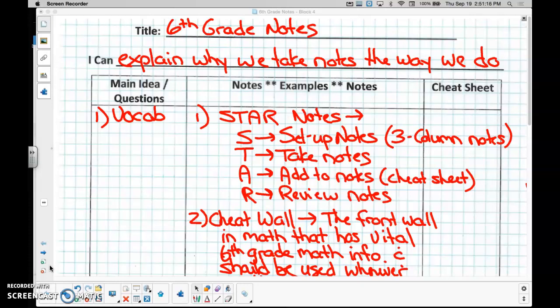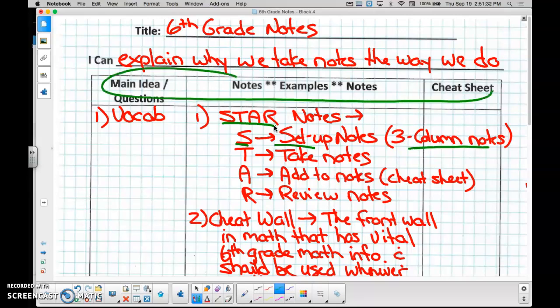There are a few vocab words we need to discuss. The first vocab word is star notes. Star is an acronym for the following. What does the S in star stand for? Set up notes. And what kind of notes do we set up? We call them column notes. These are our three columns right here. What does the T stand for? Take notes. So after you set up your notes, you take the notes with me. And then what does the A stand for? Add notes. And where do we add the notes? The cheat sheet. That's where we do our thinking about the notes. And then what's the R stand for? Review notes. And we review notes by making a video and then we also watch the video.